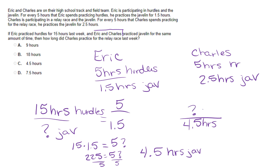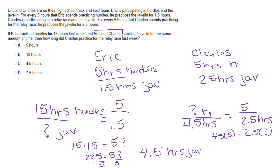We need to find how many hours Charles practiced the relay race. His ratio is five hours relay to two and a half hours javelin. So we cross multiply: four and a half times five equals two and a half times the question mark.